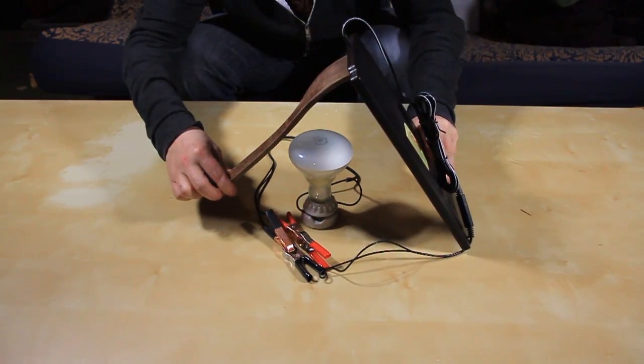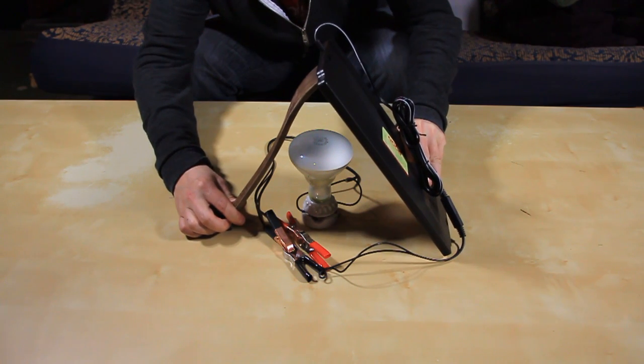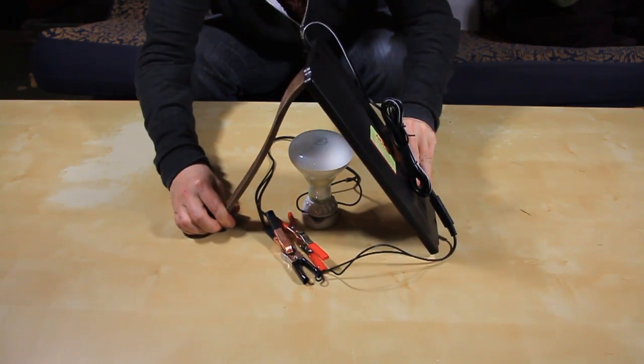Okay, so we went ahead and mounted the solar panel directly over the bulb, securing it in place with a little bit of tape.